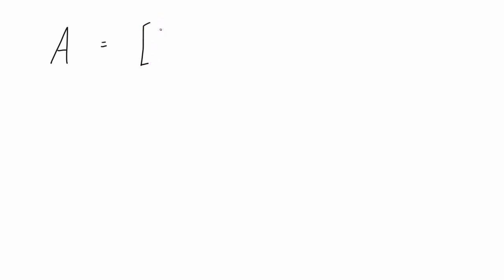So if you have a matrix, let's call it capital letter A, and for this example we have a 2 by 2 matrix with the elements A, B, D, and E. This works for matrices of any size — they don't have to be square, they can be M by N. But for this example we're just going to do 2 by 2.